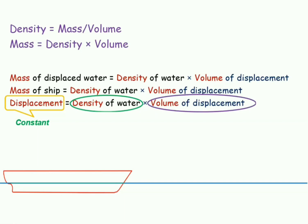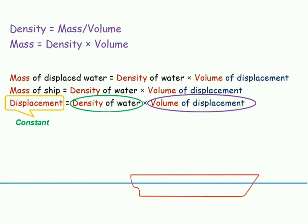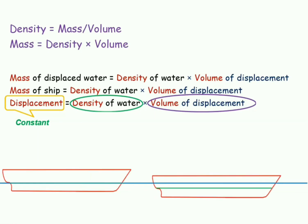And hence, it will cause a respective change in the mean draft of a ship. If density decreases, the volume of displacement increases, and if density increases, the volume of displacement must decrease. In general, we can say that volume of displacement is inversely proportional to density.